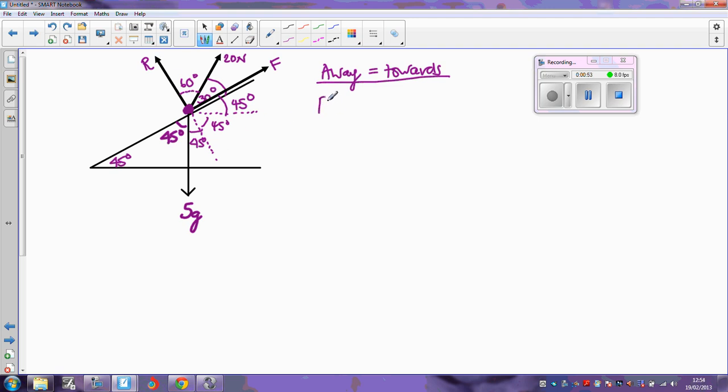Acting away from the slope, I've got all of R and I've also got the component of the 20-newton force which is acting in this direction, in the direction of R, and that's going to be 20 cos 60 degrees. So I'm taking away from the slope there to be one direction.